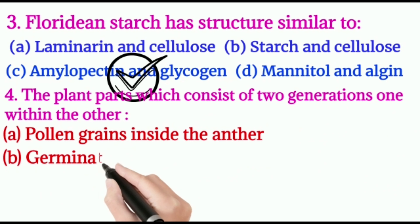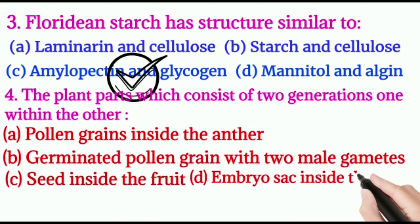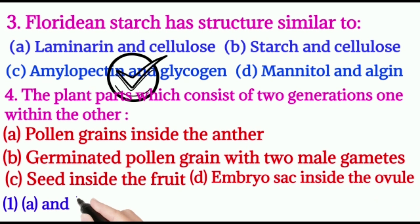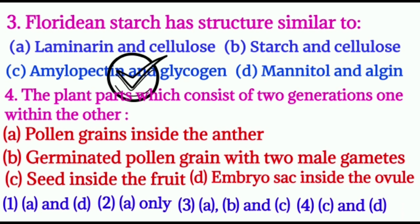Question number four: the plant parts which consist of two generations one within the other — option A: pollen grains inside the anther, option B: germinated pollen grain with two male gametes, option C: seed inside the fruit, option D: embryo sac inside the ovule. The right answer is options A and D.